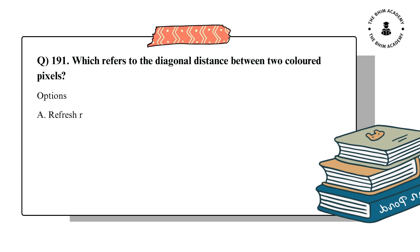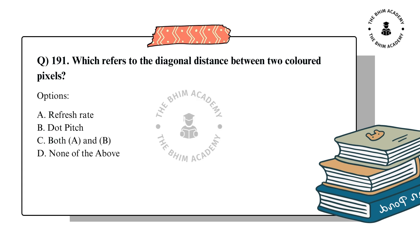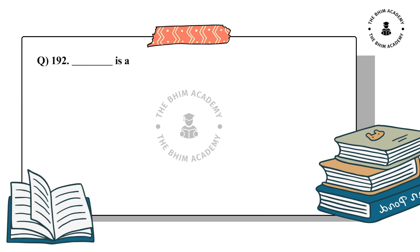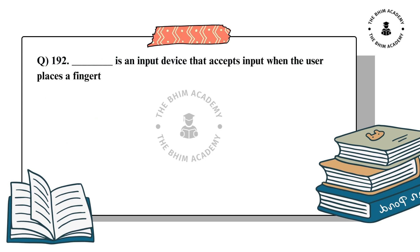Question number 191. Which refers to the diagonal distance between two colored pixels? The options are: A. Refresh rate, B. Dot pitch, C. Both A and B, D. None of the above. The correct answer is B. Dot pitch.